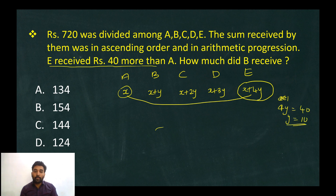So: a equals x, b equals x plus 10, c equals x plus 20, d equals x plus 30, e equals x plus 40.